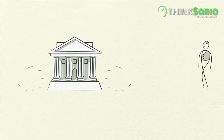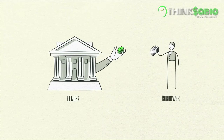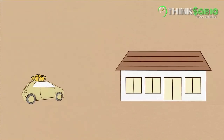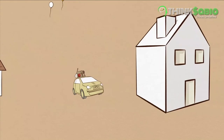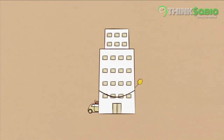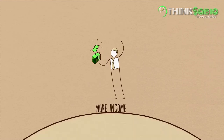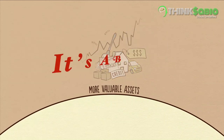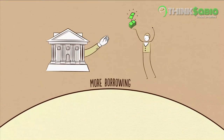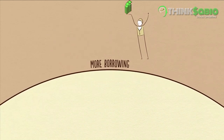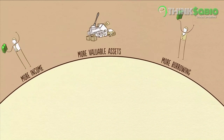Despite people becoming more indebted, lenders even more freely extend credit. Why? Because everyone thinks things are going great. People are just focused on what's been happening lately — incomes have been rising, asset values are going up, the stock market roars. It's a boom. It pays to buy goods, services, and financial assets with borrowed money. When people do a lot of that, we call it a bubble.